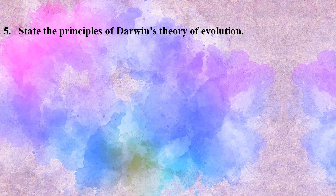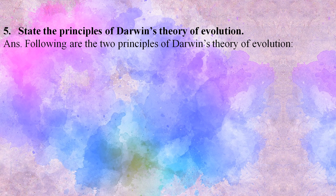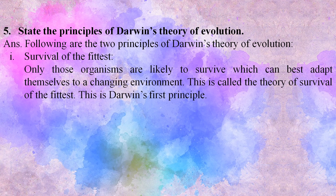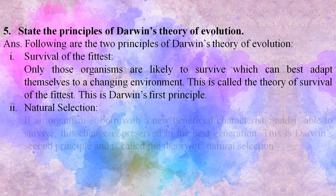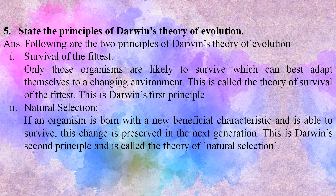The following are the two principles of Darwin's theory of evolution. First, survival of the fittest — only those organisms are likely to survive which can best adapt themselves to a changing environment. This is Darwin's first principle. Second, natural selection — if an organism is born with a new beneficial characteristic and is able to survive, this change is preserved in the next generation. This is Darwin's second principle and is called the theory of natural selection.